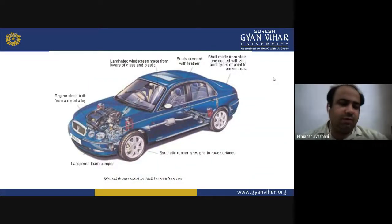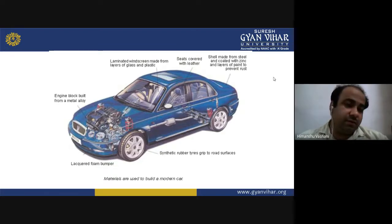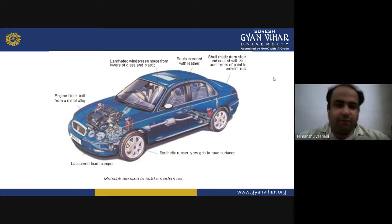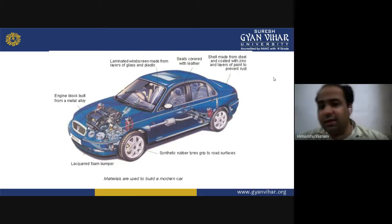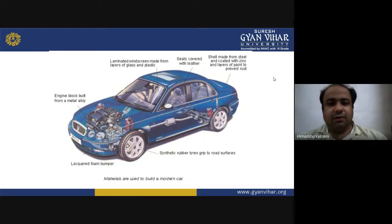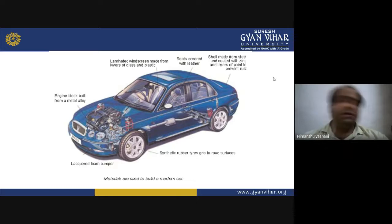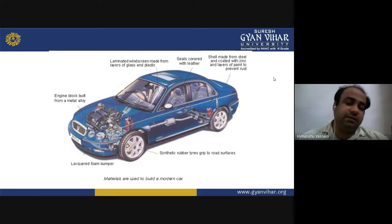This diagram shows the various materials used to build a modern car. The engine block is built from a metal alloy. Laminated windscreens are made from layers of glass and plastics. The shell is made from steel coated with zinc and layers of paint to prevent rusting. Synthetic rubber tires provide traction on road surfaces. This illustrates the variety of materials used in just a single automobile.